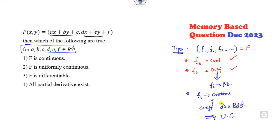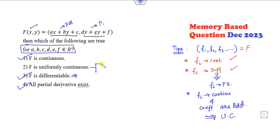Since this is a polynomial, every polynomial is continuous, so F1 and F2 are continuous, which implies capital F is also continuous. Again it's a polynomial so it's differentiable, so F is also differentiable. Since F is differentiable, the partial derivative exists — while the converse is not true. F is uniformly continuous when each Fᵢ is continuous — already proved — and the coefficients a, b, c, d, f are bounded.